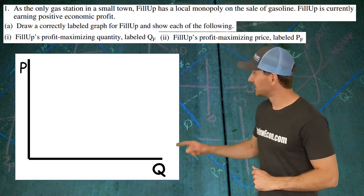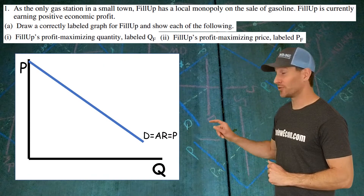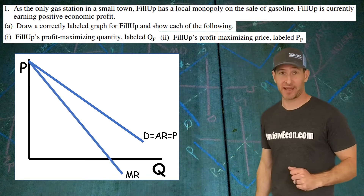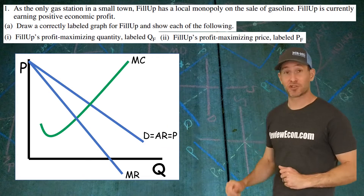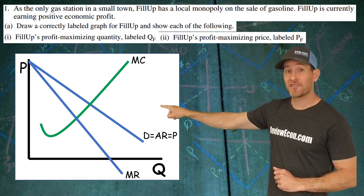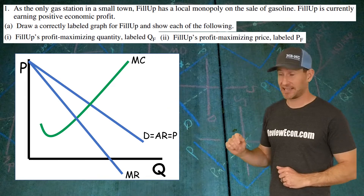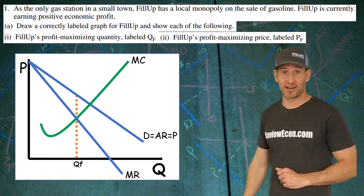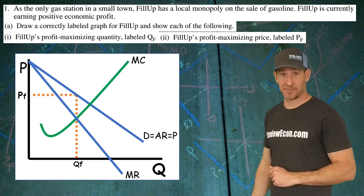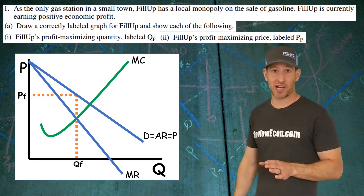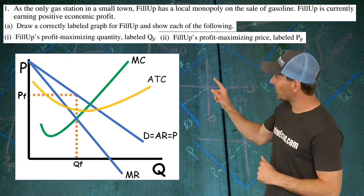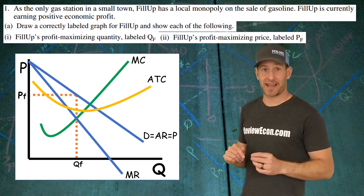Start off by drawing the graph: a downward sloping demand curve, which equals average revenue and price, with a marginal revenue curve below that demand curve. Draw your Nike swoosh marginal cost. From there, find the profit maximizing quantity where MR equals MC, drop down to get your quantity, then go up to the demand curve to get the price.